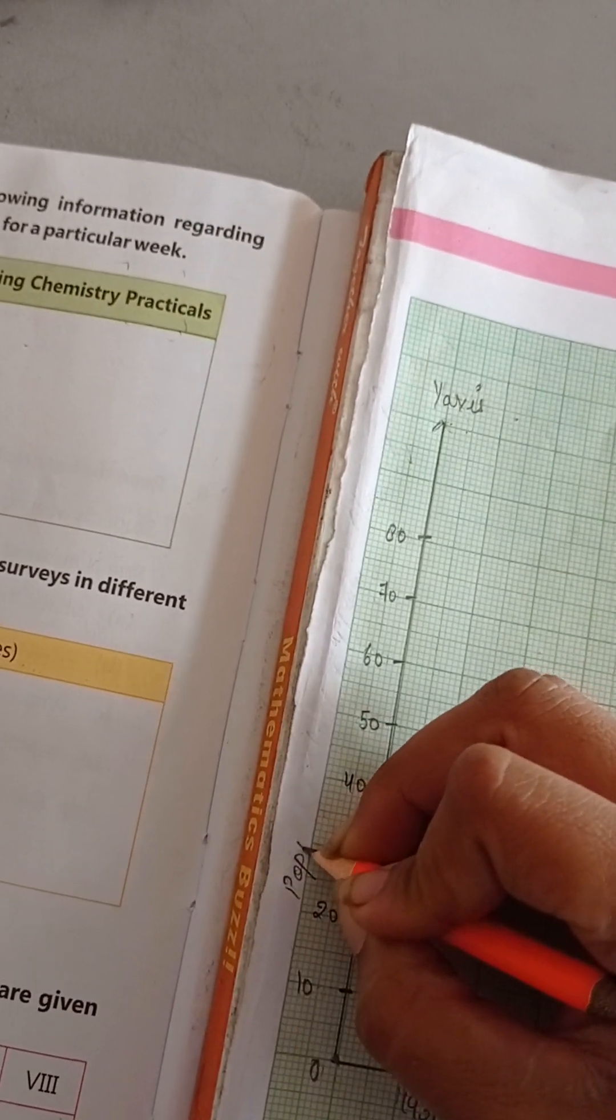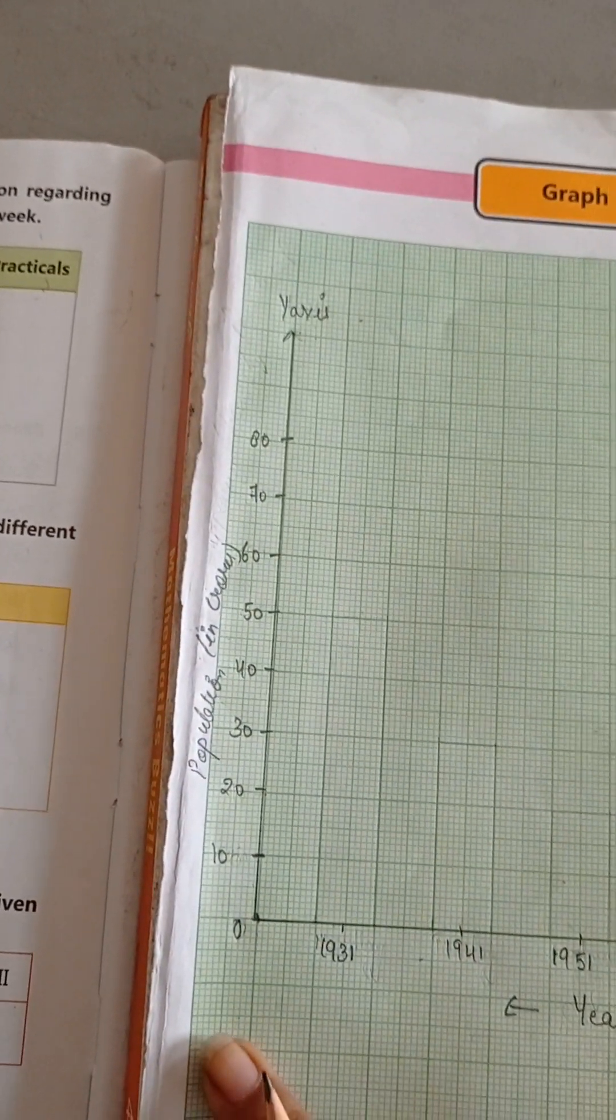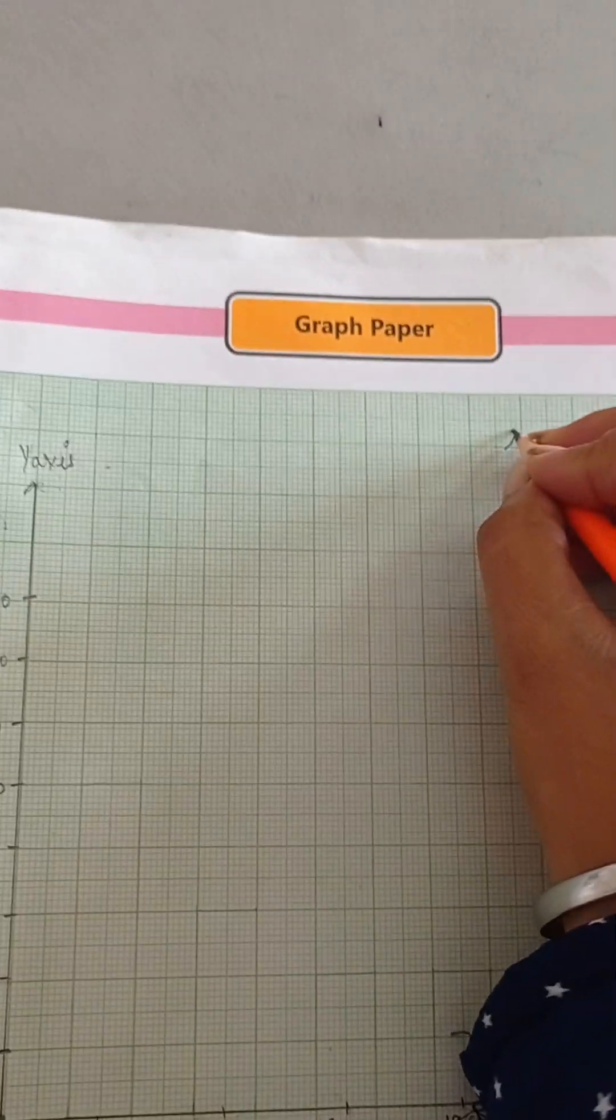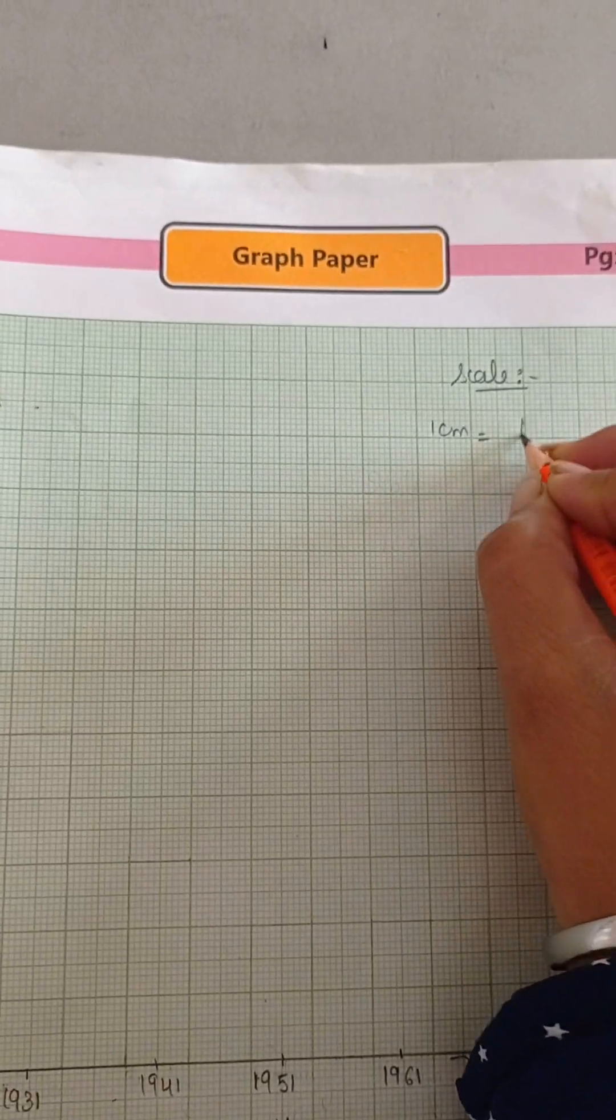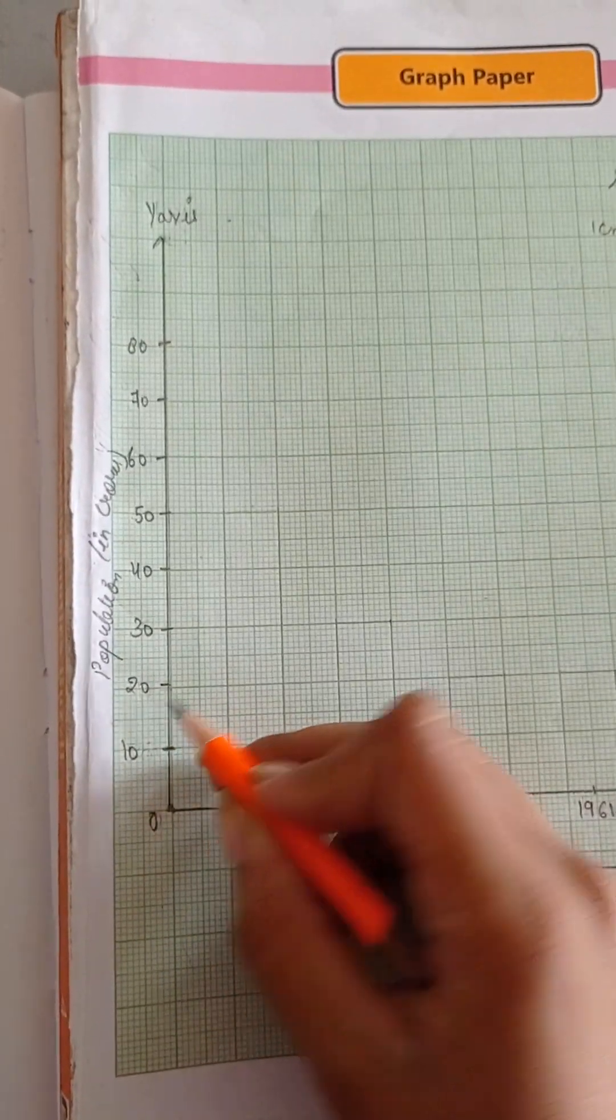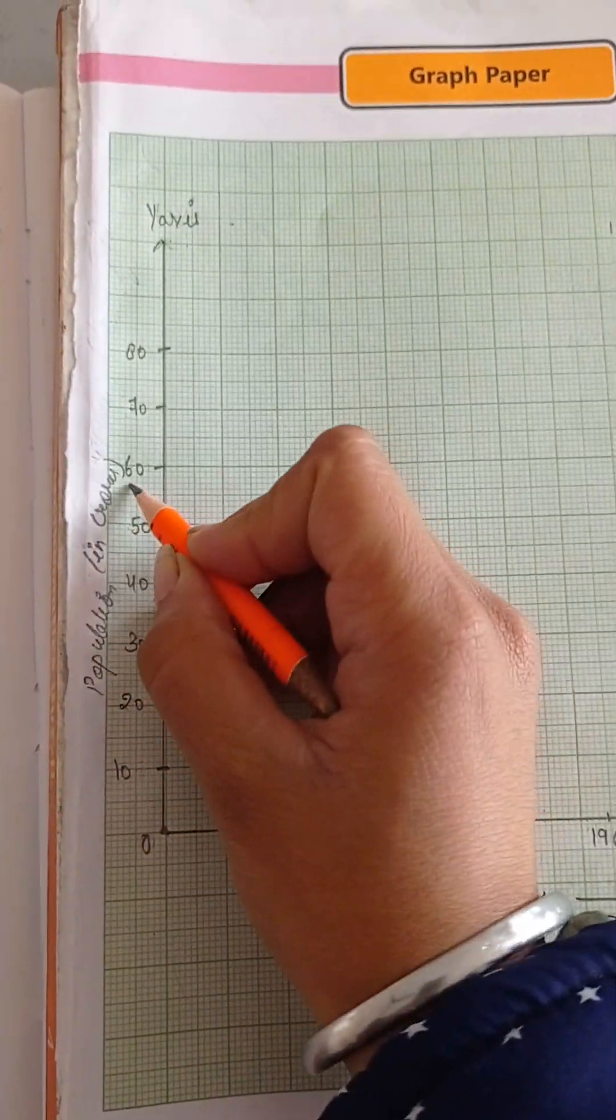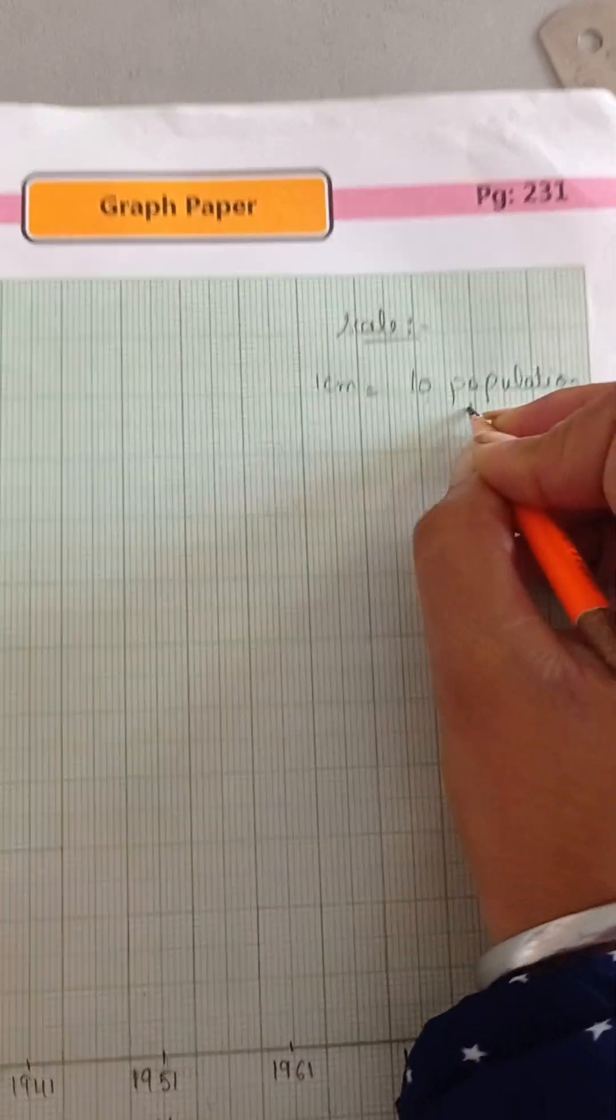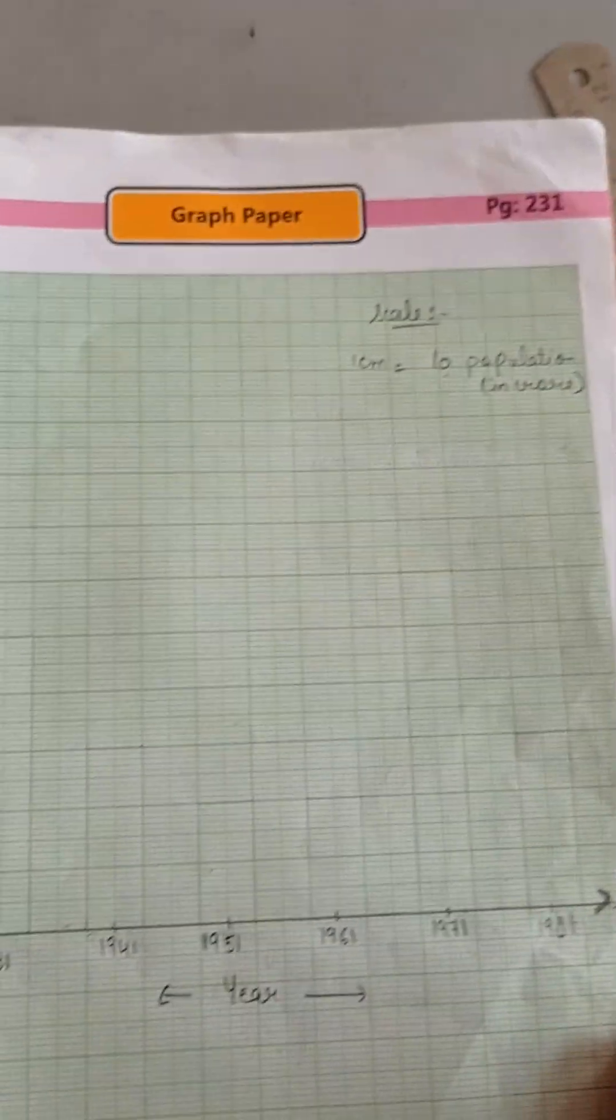You have to write here that population in crores. And don't forget to write down the scale over here. Scale 1 cm is equals to 10. You have to take a distance of 10, then write down 10 over here. And that's 10 population in crores. It means 10 crore population.